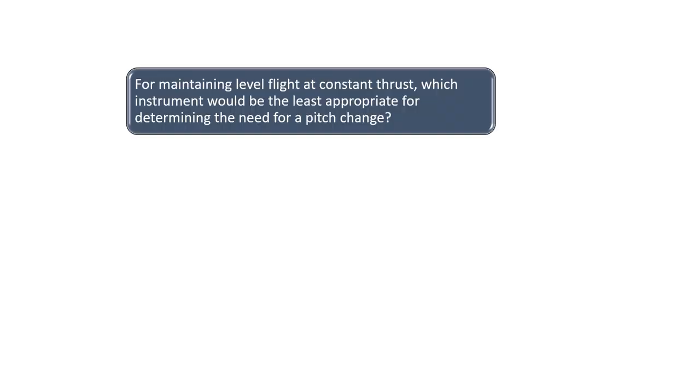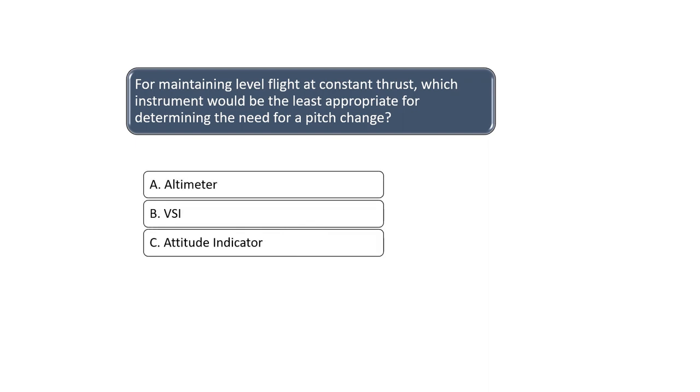For maintaining level flight at constant thrust, which instrument would be the least appropriate for determining the need for a pitch change? While the attitude indicator, vertical speed indicator and altimeter are all important for determining pitch, the vertical speed indicator and altimeter will be better at quantifying the rate of climb or descent and the subsequent pitch change needed. See Chapter 7 of the Instrument Flying Handbook for more information on the pitch instruments in flight.